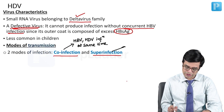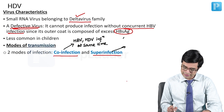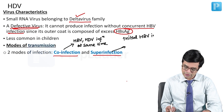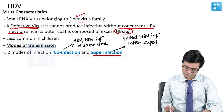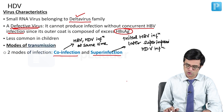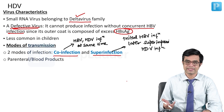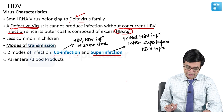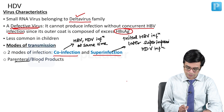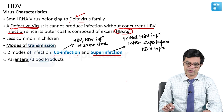In super-infection, there is initial HBV infection, and later superimposed HDV infection comes — that is called super-infection. The mode of transmission is the same as hepatitis B. It can occur through the parenteral route, blood products, or infected needles. Sexual contact is another route as well.